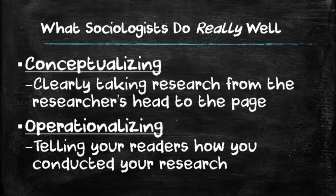The other concept is operationalizing, which comes when you actually have the mechanics of the research on a page. You've figured out what your method will be, what your design will be, your independent and dependent variables, and potentially control variables. You've decided what your population will be and figured out how to get data from them. Operationalizing means you can paint a clear picture for your reader that tells them exactly how you constructed your research project, why you did it that way, and why that way is an effective way to gather data.